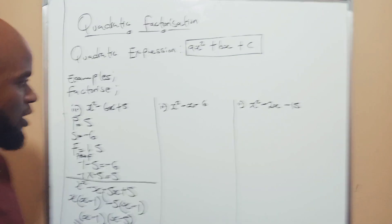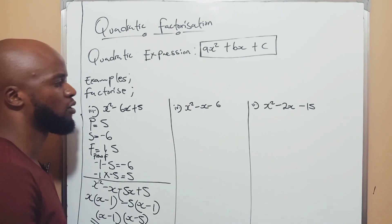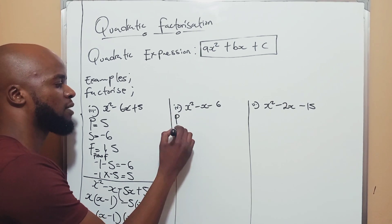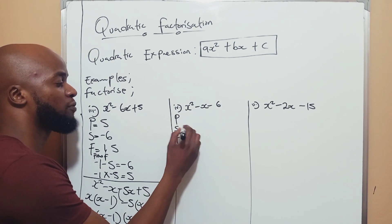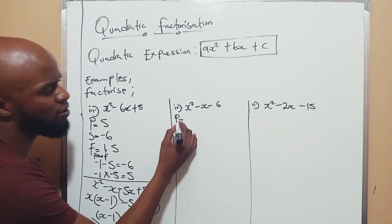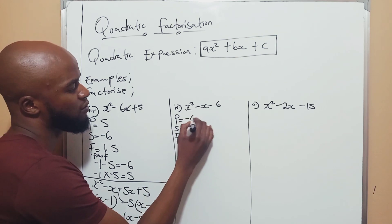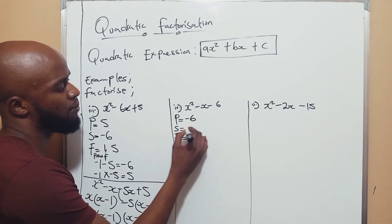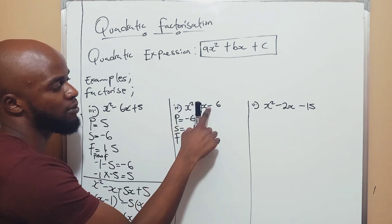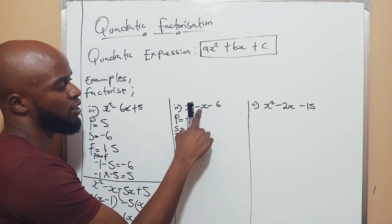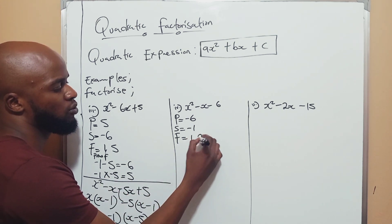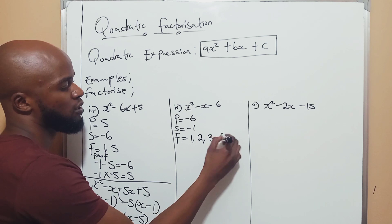Let's look at example 4. Product, sum, factor — and here we have your favorite sign, they are all negative. Product: 1 times negative 6 is negative 6. Sum: negative 1. Factors of 6: you have 1, 2, 3, 6.